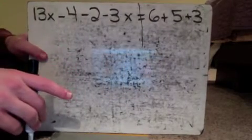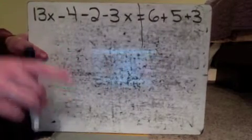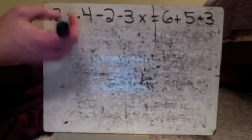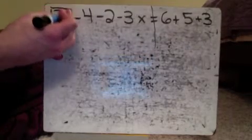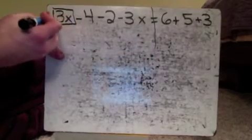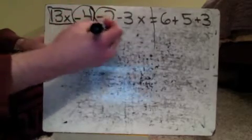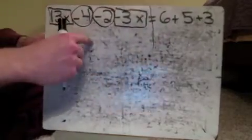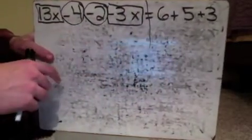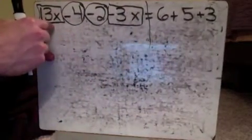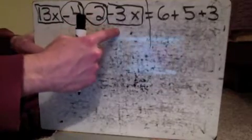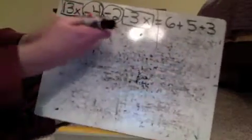Remember, we can't cross things together yet that are on both sides of the equal sign — we have to wait to cancel things out. So let's look at this side first. I can put together the 13x and the minus 3x, which would be 10x.